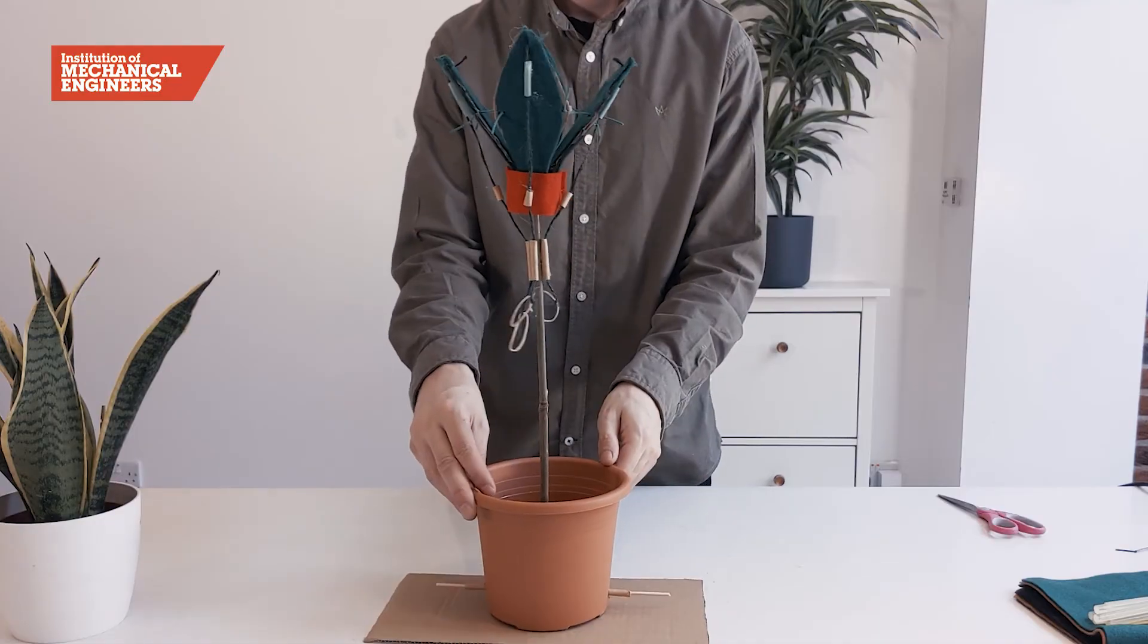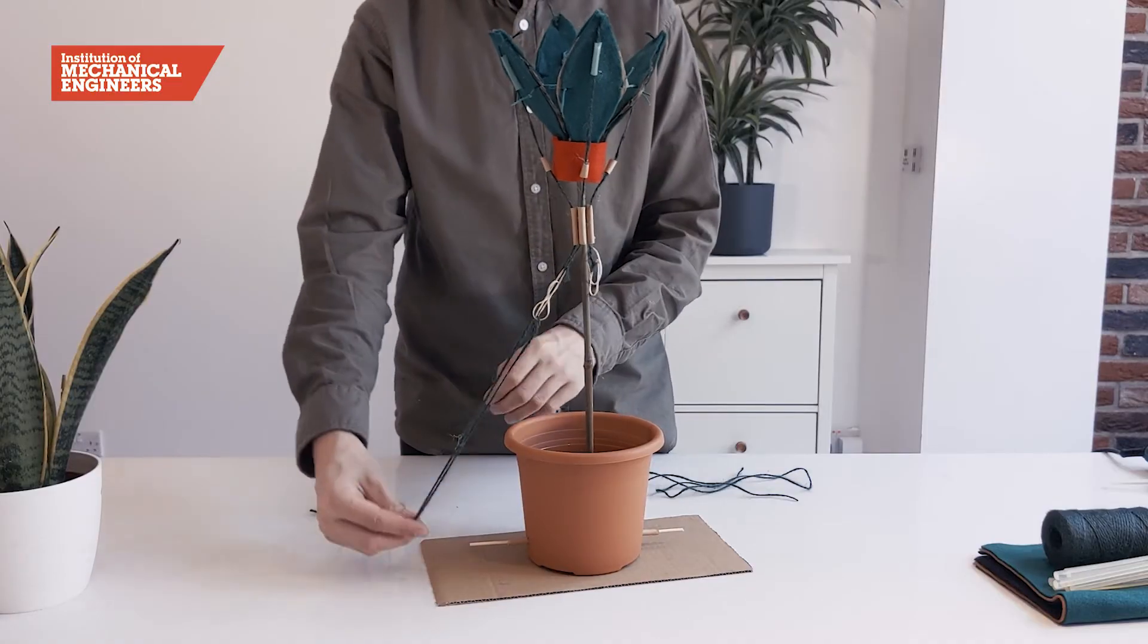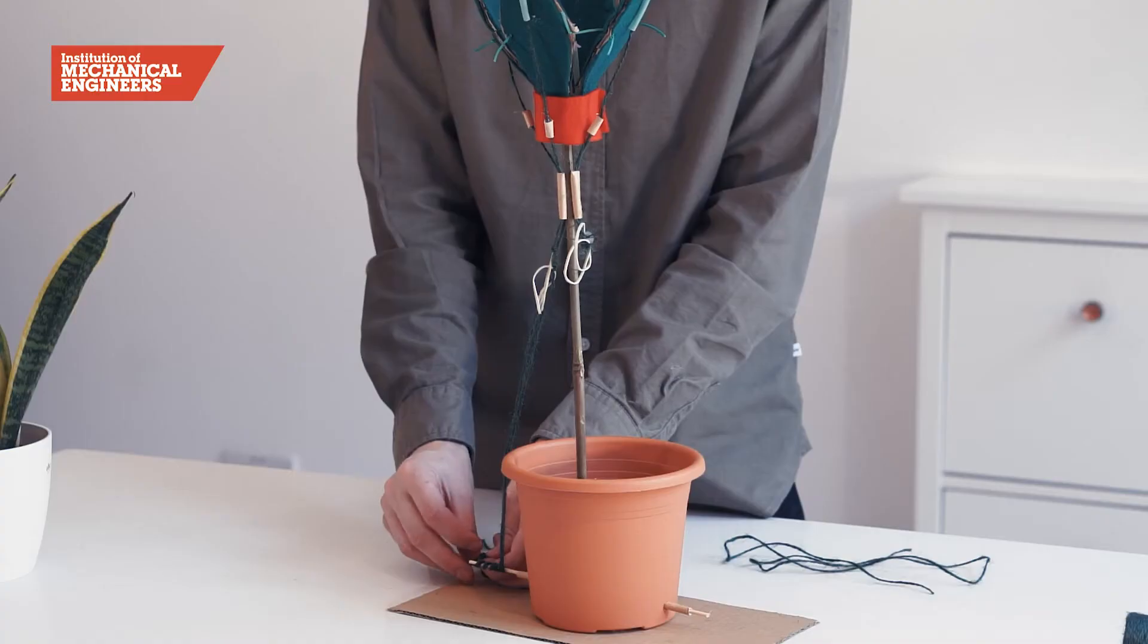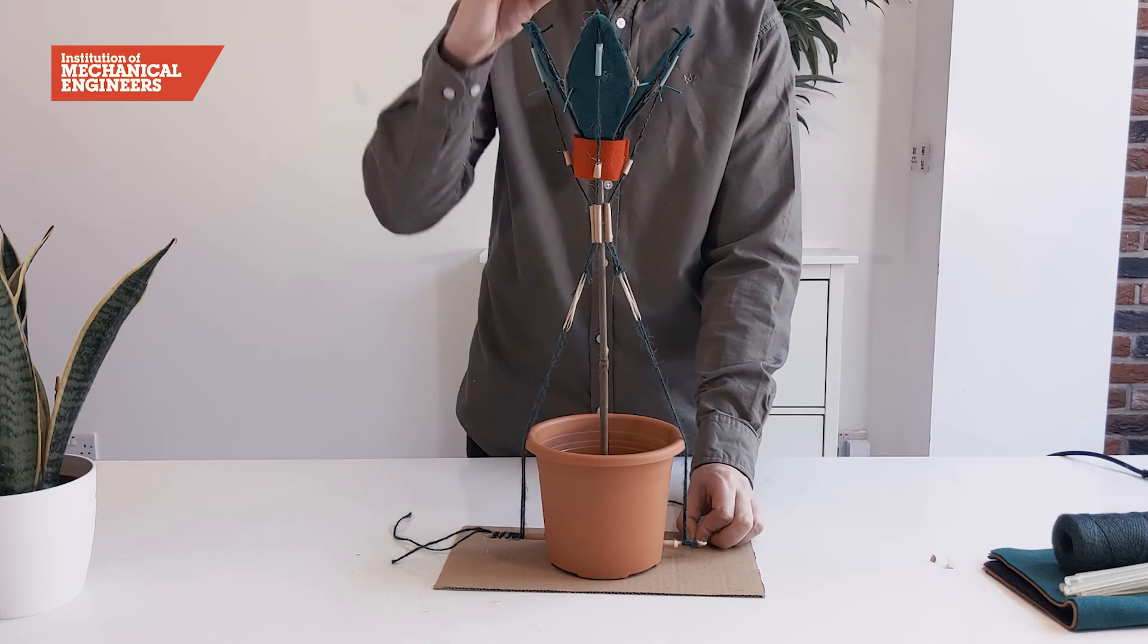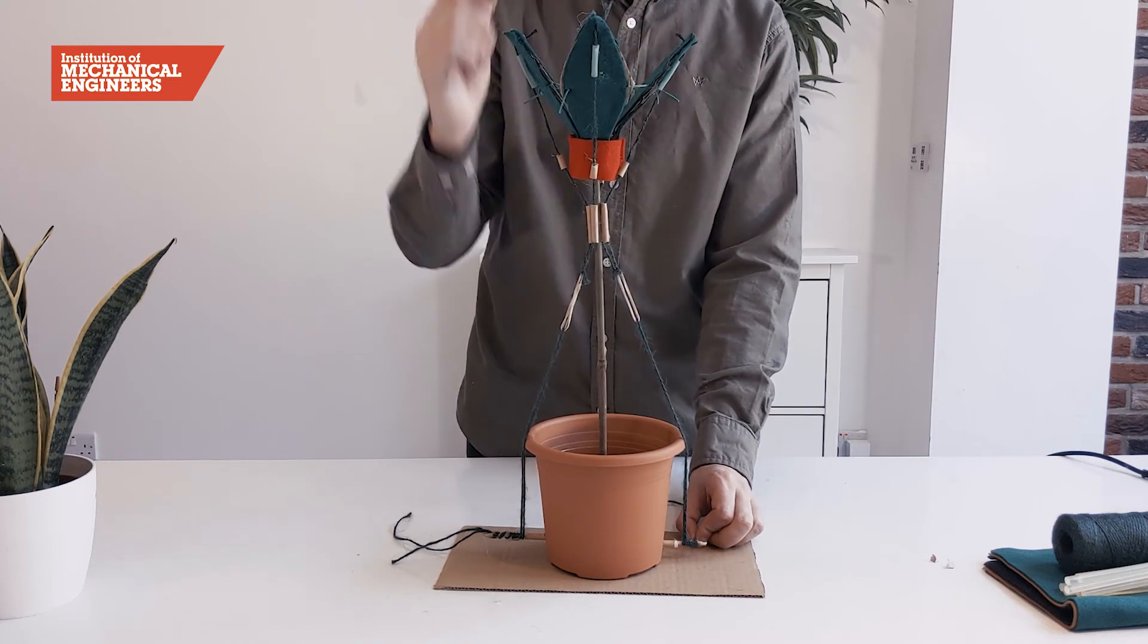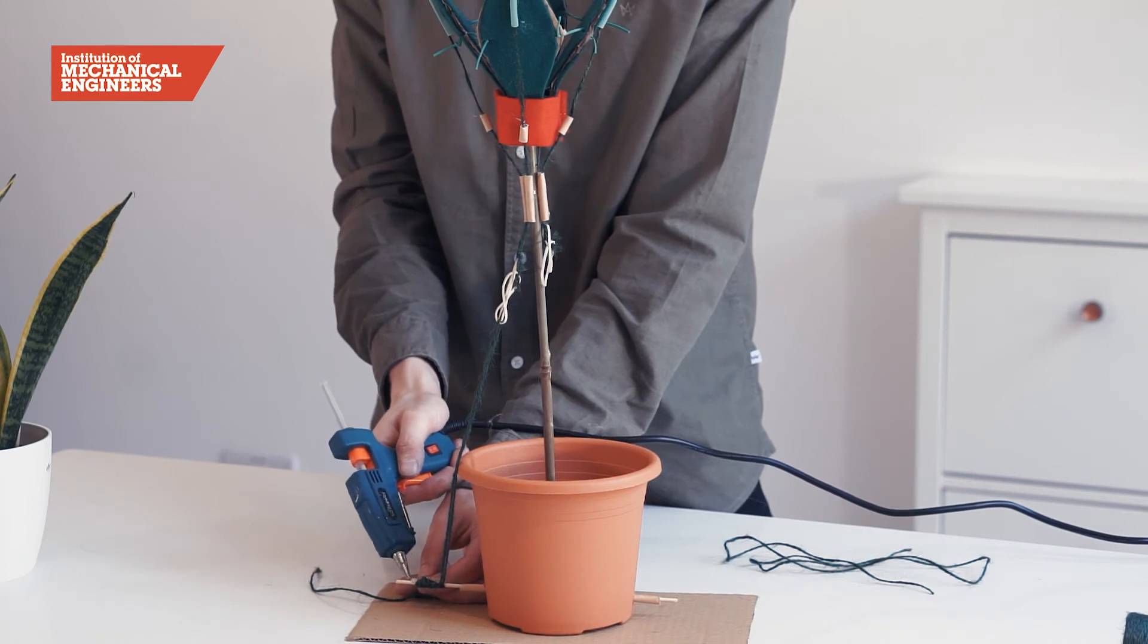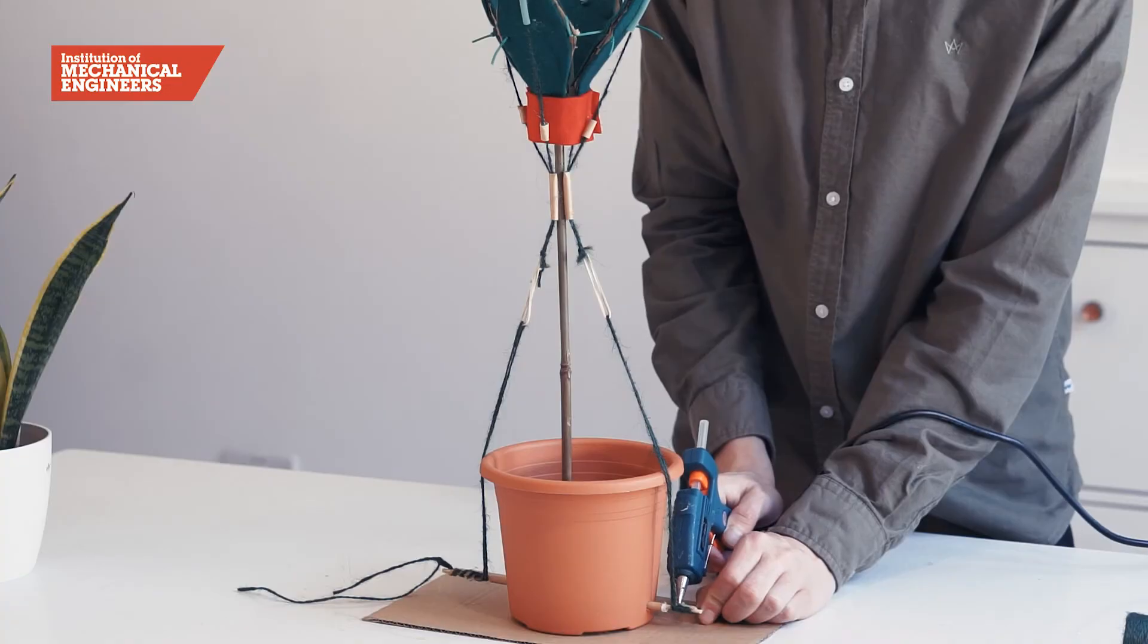To complete the winch system, thread the long length of string through the two elastic bands hanging on one side of the stem. Then, wrap the string around the kebab stick and tie the ends together to create a continuous loop. After adjusting the string so it is not too tight when the flower is in closed position, use hot glue to secure the string to the spool. We will then repeat this step for the two elastic bands on the other side of the model.